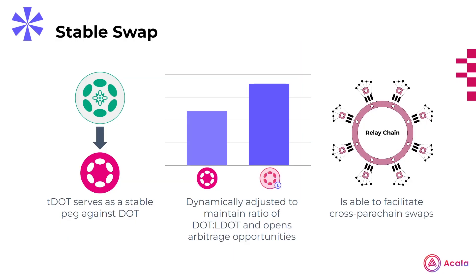Now, there are a few benefits to TDOT's existence, and first and foremost is that it serves as a stable peg against DOT, allowing you to always swap back to DOT or LDOT. It does this by maintaining a specific ratio of the underlying assets, which is dynamically adjusted by Tapio itself. Very simply, if the proportion of DOT to LDOT starts skewing a certain direction, the discount or slippage will be altered in real time to sway demand towards one of the assets, affecting their share of the pool, allowing for the ability to purchase tokens cheaply or open up arbitrage opportunities.